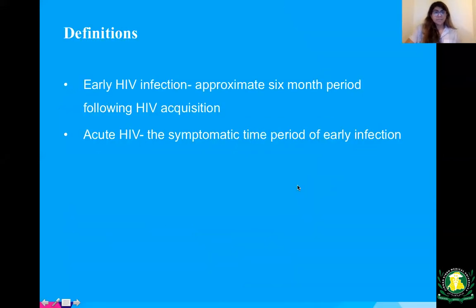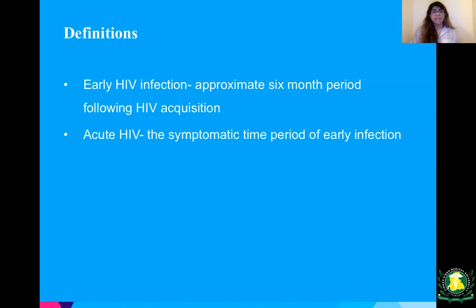Some definitions. Early HIV infection means approximately a six-month period following HIV acquisition — that six-month period that follows after the patient is infected with HIV. Then there's acute HIV, which is the symptomatic time period of the early infection.